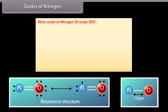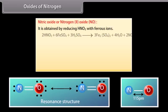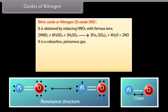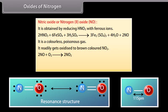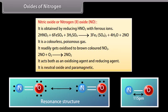Nitric oxide (NO, nitrogen 2 oxide) is obtained by reducing HNO3 with ferrous ions. It is a colorless, poisonous gas that readily gets oxidized to brown-colored NO2. It acts both as an oxidizing agent and reducing agent. It is a neutral oxide and paramagnetic.